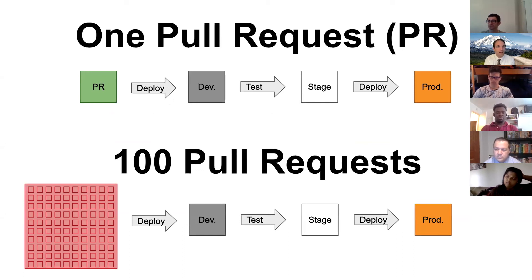That's the point of single piece flow — that's what they call it in the book. They talk about it in manufacturing and in code. The idea is one change gets made at a time for the customer.